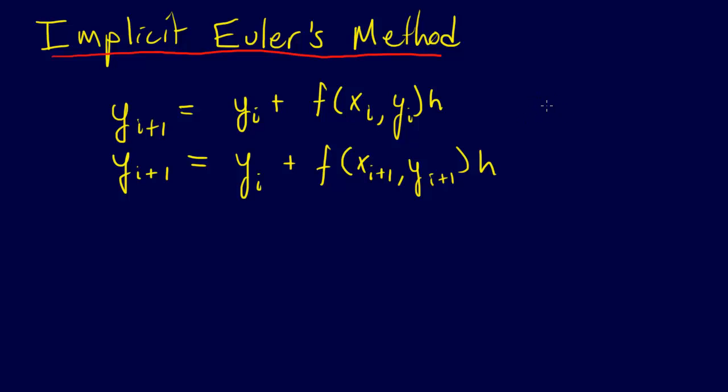So to explain the implicit Euler method, let's just look at the explicit Euler method and then compare it.